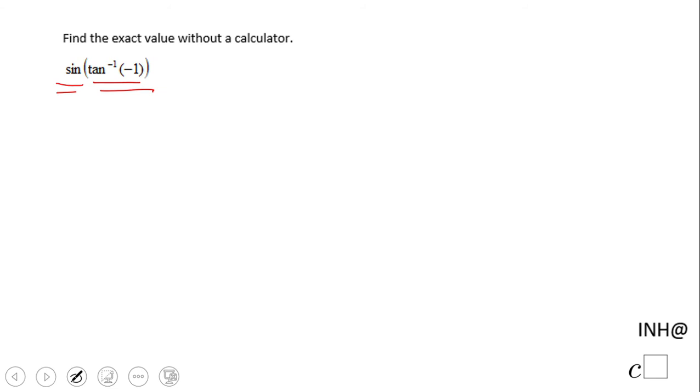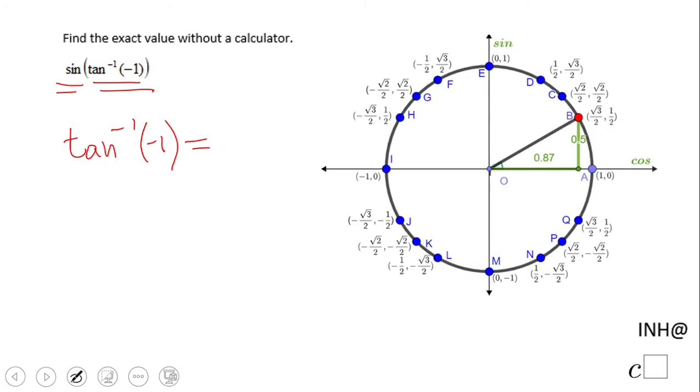First, we're going to take the inside function, which is arc tangent of negative one. We need to find an angle for which the tangent is negative one.